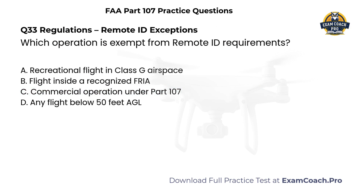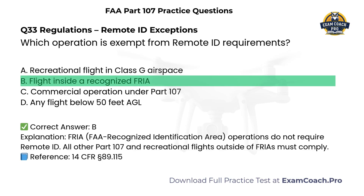Regulations — Remote ID Exceptions. Which operation is exempt from Remote ID requirements? A. Recreational flight in Class G airspace. B. Flight inside a recognized FRIA. C. Commercial operation under Part 107. D. Any flight below 50 feet. Correct answer: B. Flight inside a recognized FRIA, or FAA-recognized identification area, operations do not require Remote ID. All other Part 107 and recreational flights outside of FRIAs must comply.